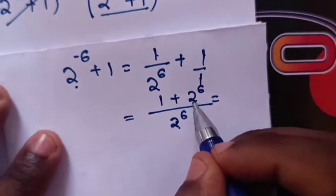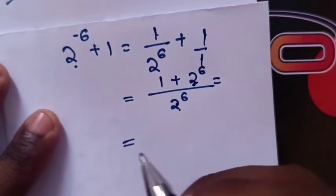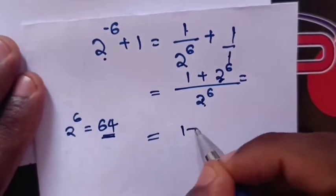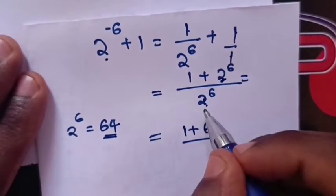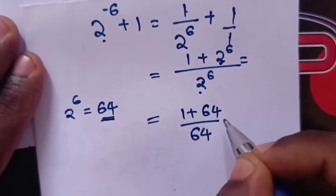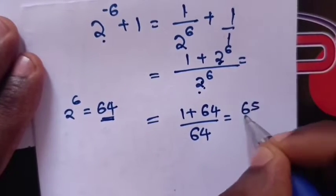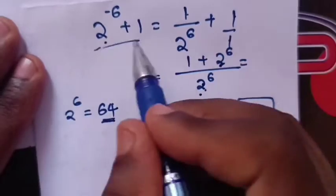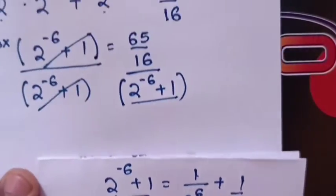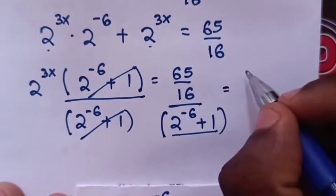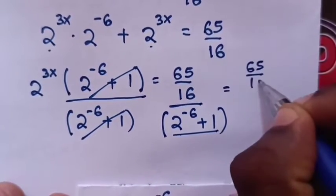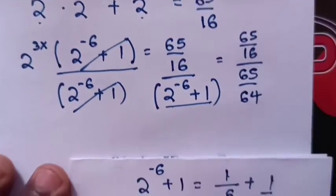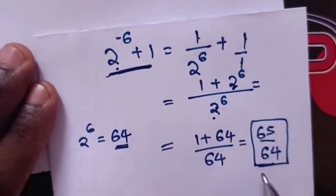Since 2^6 = 64, we substitute: 1/64 + 1 = (1 + 64)/64 = 65/64. So we substitute this fraction 65/64 into the denominator.